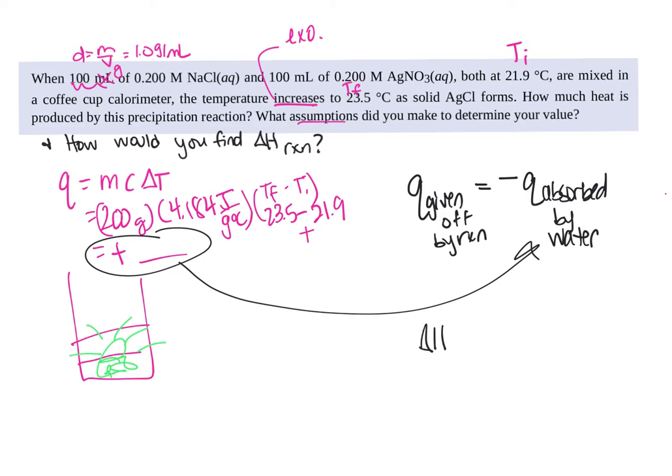So to find your delta H, you're going to do the Q of the reaction, which is going to equal the opposite of whatever you got, divided by moles of the reaction. So what are your moles of the reaction?